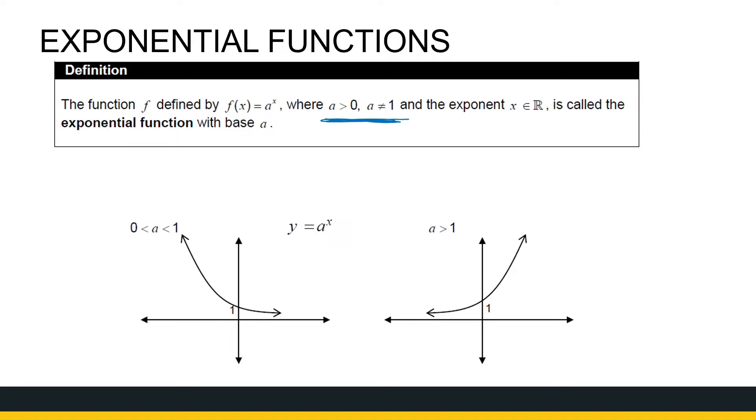And it takes on two basic shapes. In the case where a is greater than 1, it's got the shape where it's increasing towards the positive x-axis. And the shape when a is between 0 and 1, it decreases towards the positive x-axis. So that is my exponential function.